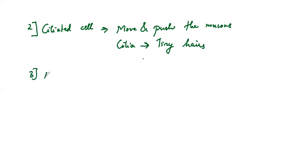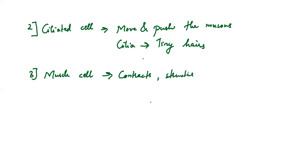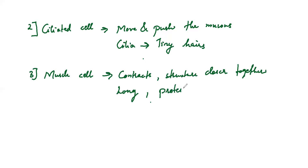Next comes the muscle cell, which is very important whenever contraction is needed. Basically, the muscle cell contracts so that whatever structures are there get closer together and perform the function. This muscle cell, as compared to the rest of the animal cells, will be long, with plenty of protein fibers. Whenever energy is available, the muscle cell becomes short — that is the feature of the muscle cell.